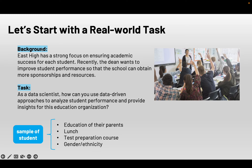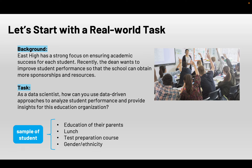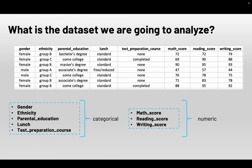Let's say we want to start with a real-world task. The background is East High School, which has a strong focus on ensuring academic success for each student. Recently, the dean wants to improve student performance so that the school can obtain more sponsorships and resources. The task given to you, as a data scientist, is how can you use data-driven approaches to analyze student performance and provide insight for this education organization? Let's talk about this sample of the student and their performance. The data looks like this — we have several columns and a lot of rows. This is just a piece of the dataset.